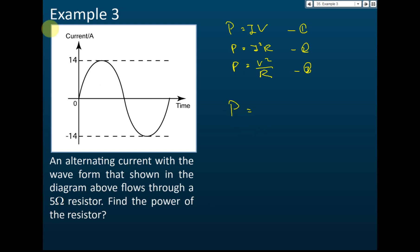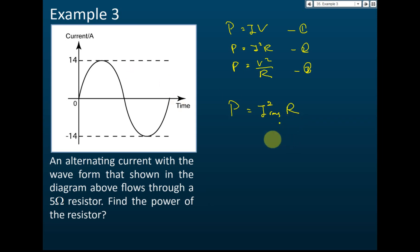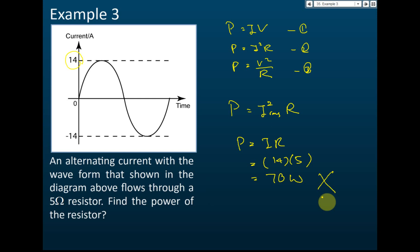Remember, for alternating current, the current and voltage you use to find power must be the root mean square current or root mean square voltage. So P equals I_rms squared times R. You cannot use the peak current directly. Some students write P = 14² × 5 = 70 watts — that is not correct, because the peak current cannot be used here. It must be the root mean square current, which is the effective, actual current.